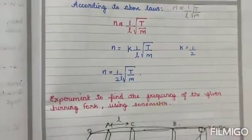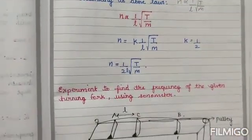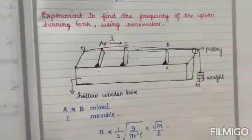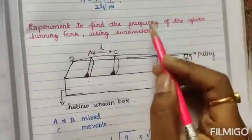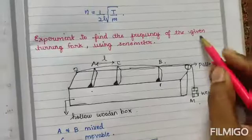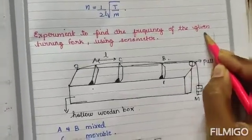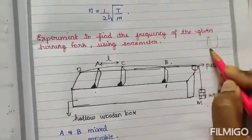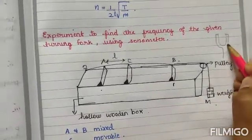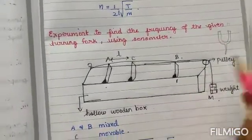Next: experiment to find the frequency of a tuning fork using a sonometer. We use the sonometer when we need to find frequency, and for that we need a tuning fork.